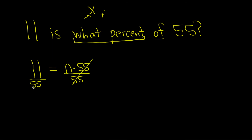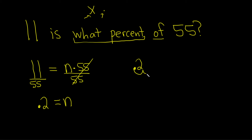If you put that in your calculator, you will get 0.2. And that's equal to n. However, we want the actual percentage, so now we need to convert this decimal to a percent. If you have 0.2 and you want to convert it to a percentage, you take the decimal and you move it over two places to the right. You put a zero here, and so the answer would be 20%.